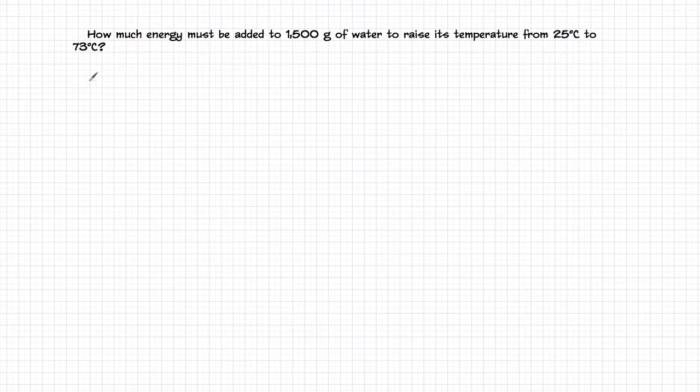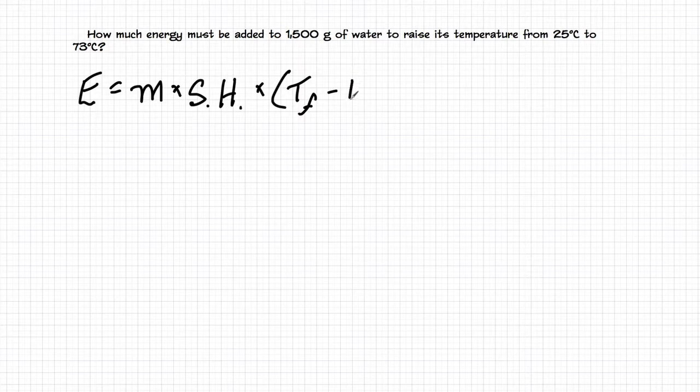Okay, so here we are. And we're asked how much energy must be added to 1,500 grams of water to raise its temperature from 25 to 75 degrees Celsius. Well, the first thing I want to do is write down the equation that I'm going to apply. Energy is equal to mass times the specific heat times T final minus T initial. It's always a good idea to start out by writing down your equation. It helps fix it in your mind. And at least in Mr. Chappell's class, it's good for at least a point of partial credit.